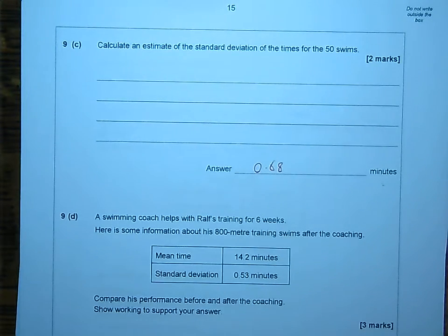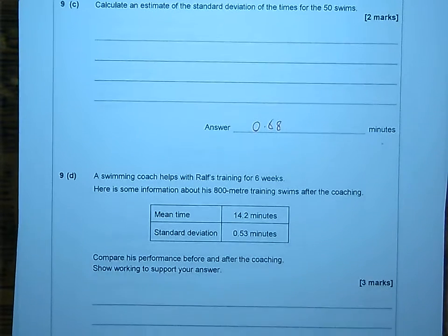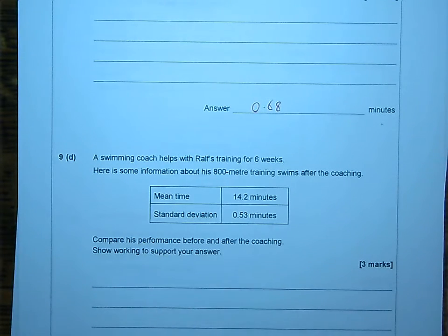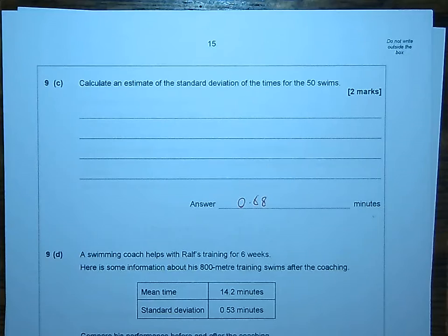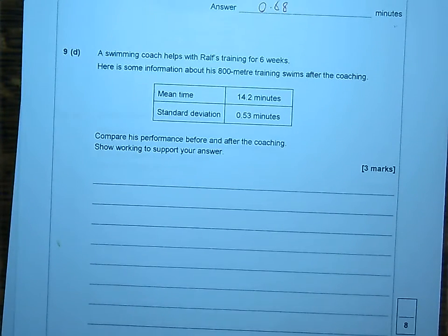Okay, it doesn't say you must show your working. It basically wants you to do it in the calculator. There's no way you're able to do it manually without the calculator or without the table function in the three minutes that these two marks would allow. And down here, we've got the last part of this question, which is 9d. A swimming coach helps with Ralph's training for six weeks. Here is some information about his 800 meter training swims after the coaching. Okay, compare the performance before and after the coaching. Show working to support your answer.